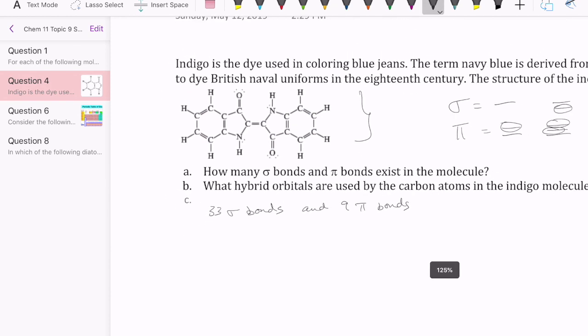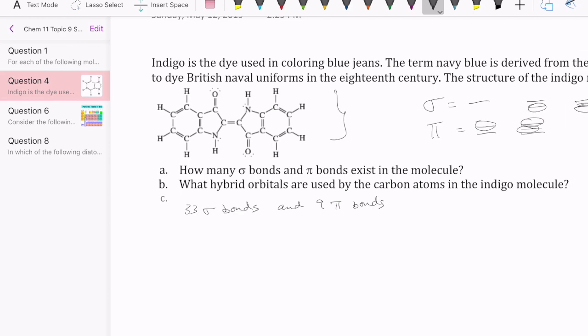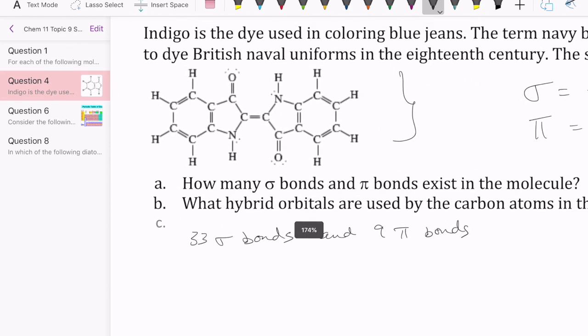Now let's answer the second question. The second question is, what hybrid orbitals are used by the carbon atoms in the indigo molecule? So let's take a look.